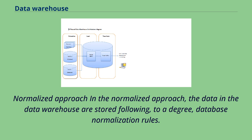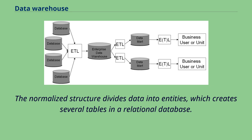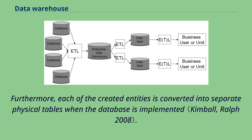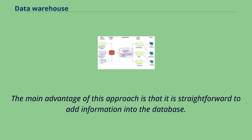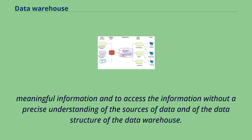In the normalized approach, the data in the data warehouse are stored following database normalization rules. Tables are grouped together by subject areas that reflect general data categories. The normalized structure divides data into entities, which creates several tables in a relational database. When applied in large enterprises, the result is dozens of tables linked together by a web of joins, and each created entity is converted into separate physical tables when the database is implemented. The main advantage is that it is straightforward to add information into the database. Disadvantages include difficulty for users to join data from different sources into meaningful information without a precise understanding of the data structure.